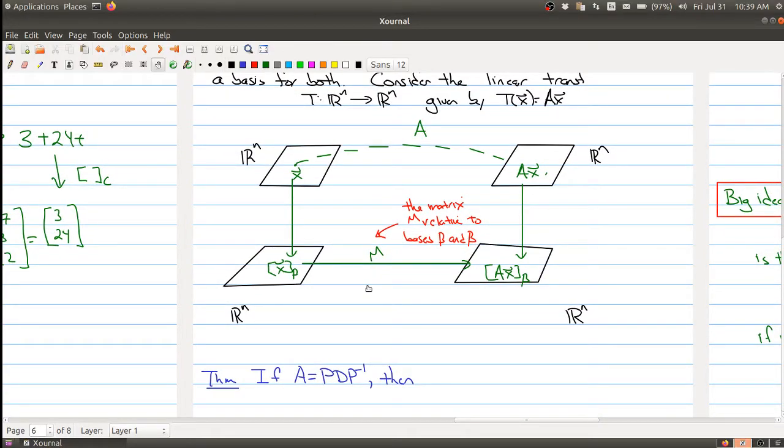Well, this is where the magic of diagonalization comes in. If you knew that this was a diagonalization, then this matrix M is actually equal to the diagonal matrix. The map is given by diagonal matrix. So this matrix M, which is relative to basis B, actually is the matrix D in terms of this factorization.